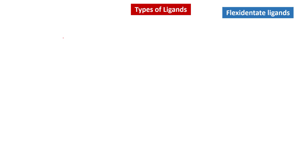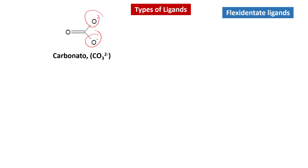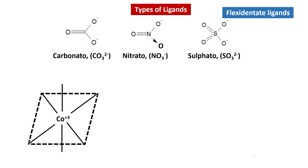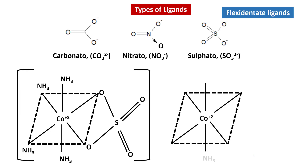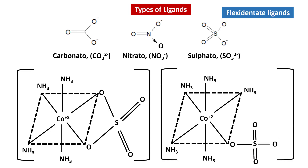Let's move to flexidentate ligands. As the name suggests, they are flexible in attaching to the central metal atom. For example, the carbonato ion can attach through one oxygen atom or through both oxygen atoms, giving it flexibility. Similarly, nitrato and sulfato show this property. In one example a sulfato ion is attached through two oxygen atoms, while in another it is attached through only one oxygen atom. The charge on the central metal atom — cobalt 3+ vs cobalt 2+ — is balanced accordingly. These are called flexidentate ligands.